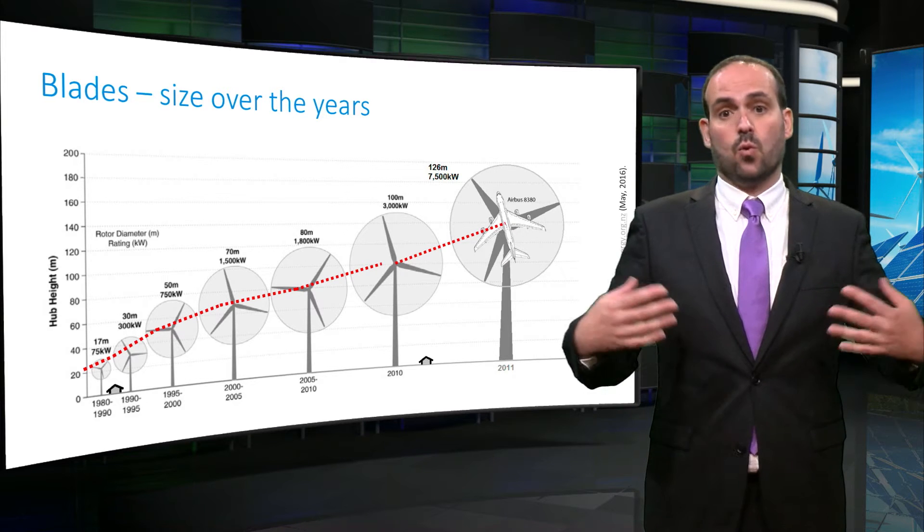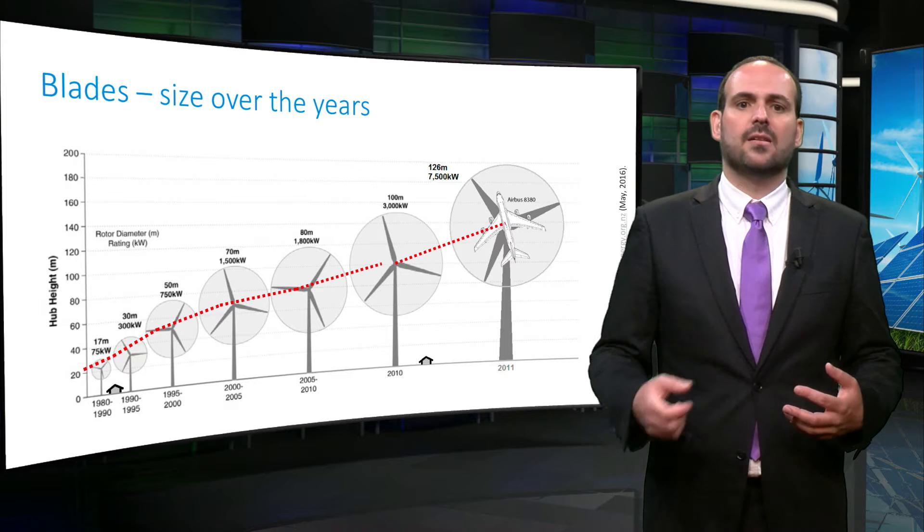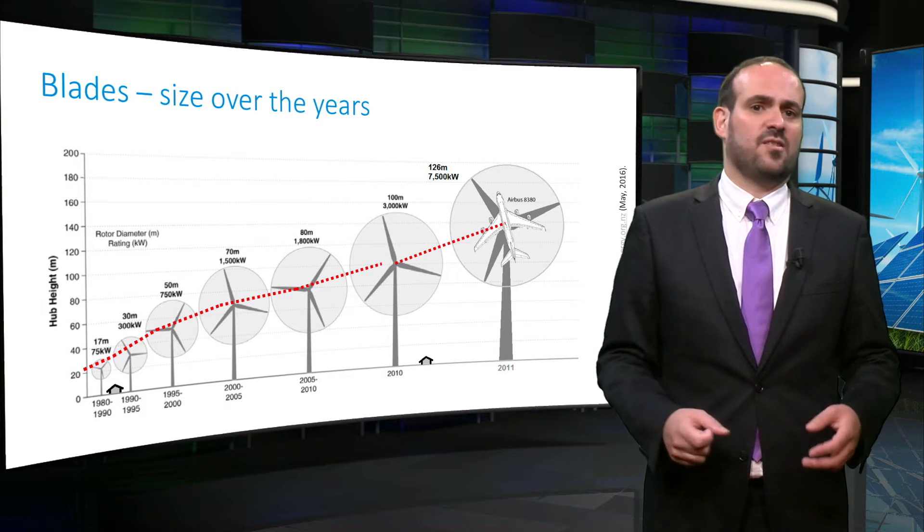As wind turbines have progressively grown, the rotor and blade scale can be easily over a hundred meters, the scale of a large passenger aircraft.